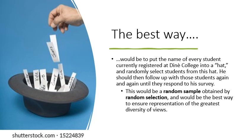So the best way would be to put the name of every student currently registered at Diné College into a hat and randomly select students from the hat. Then once all of the students he wants are selected, he should follow up again and again and again with those same students until they respond to his survey. Maybe he would even end up paying them to respond to the survey and he doesn't want to substitute in other students because then we're having bias introduced again. Doing it that way would be a random sample obtained by random selection and that would be the best way to ensure representation of the greatest diversity of views.